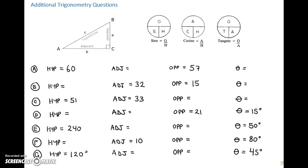Alright, let's rock and roll. We've got the first one. We've got a hypotenuse of 60 and an opposite of 57. At this point, adjacent and opposite should be in your head. We're looking for the adjacent. We know two other sides, so let's use Pythagoras.